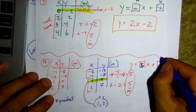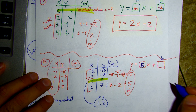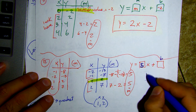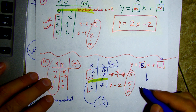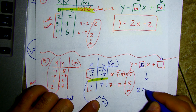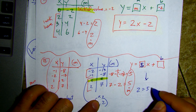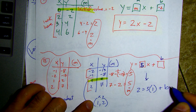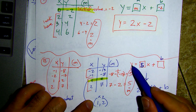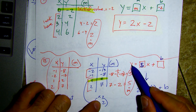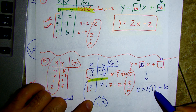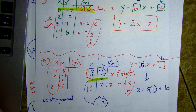For y I'm going to plug in two, and I have two equals five times x plus b. I plugged in two for y and one for x because I'm using the point one, two.